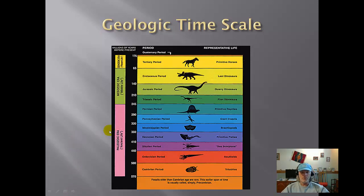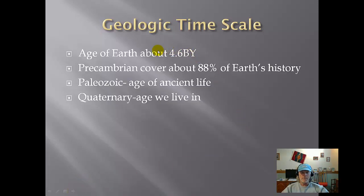The geologic time scale has many, many forms out there. You've looked at this, especially with the last activity on relative time dating. One thing to notice is what's called the Precambrian. This Precambrian period covers about 88% of Earth's history. The Earth is about four and a half to five billion years old, and 88% of that time is Precambrian. When you looked at your football field activity, you saw that most events were really put near the top, or relatively recent geologically speaking.